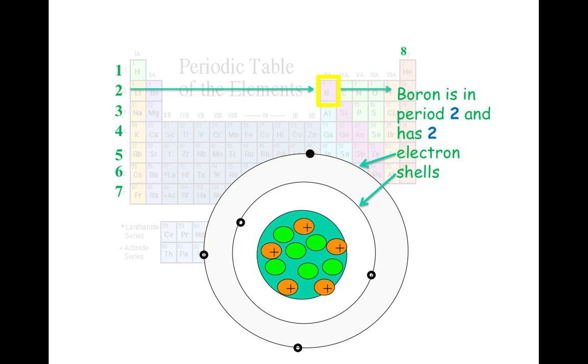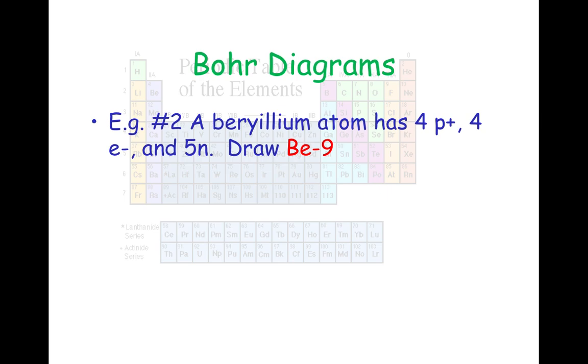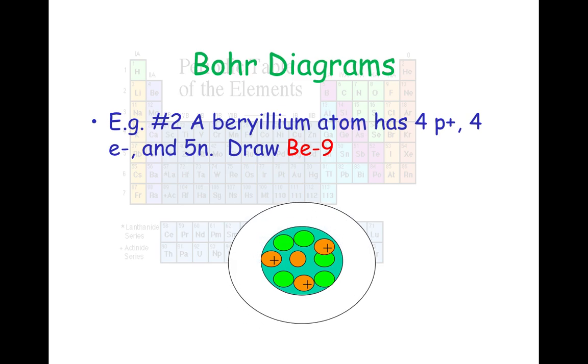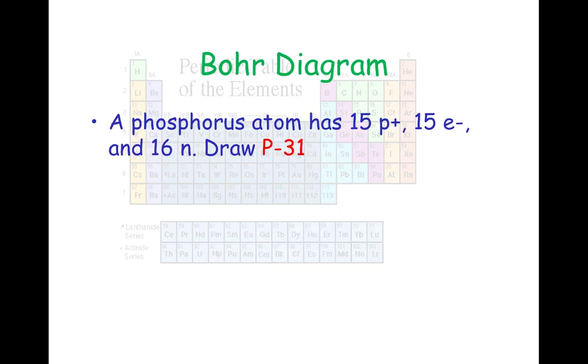Let's see if you guys can do this next one on your own. Again, boron is in period two and it has two electron shells. The number of shells is equal to the period number. Let's do beryllium nine. Go ahead and draw the nucleus with my four protons and my five neutrons. Now draw your first electron shell. How many can fit in that first shell? Two. How many do I have left over if I have four electrons total? I have two left over, so those remaining two electrons go into my outermost shell.